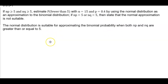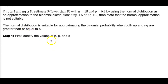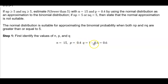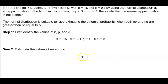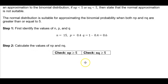The normal distribution is suitable for approximating the binomial probability when both n times p and n times q are greater than or equal to 5. So we want to first identify the values of n, p, and q. We know that n is equal to 15, the probability p is 0.4, and to find q — the complement of p — it's 1 minus 0.4, which equals 0.6. Now we want to calculate the values of n times p and n times q and check both of them.